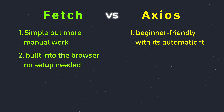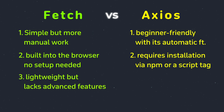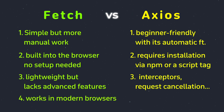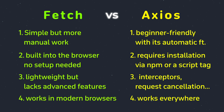Fetch is lightweight but lacks advanced features, whereas axios has interceptors, request cancellation, and more. Fetch works in modern browsers but needs polyfills for older ones, whereas axios works everywhere — including old browsers and Node.js environments.